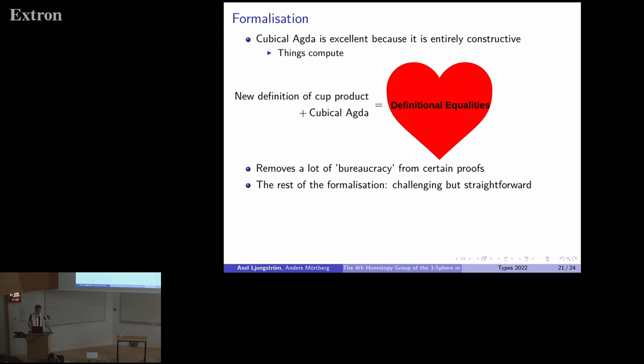We like to work in cubical Agda because it's great for this type of stuff because things compute. I'm not talking about the fact that univalence computes. I'm talking about the fact that when you define a map out of a higher inductive type, you get definitional equalities. When you have a new definition of the cup product and you have cubical Agda, you get a lot of definitional equalities. A lot of these bureaucracies that arise from reasoning about cubes, coherence paths, they sort of vanish in cubical Agda because they normalize to things that look reasonable.